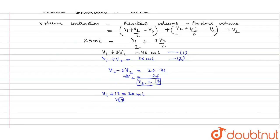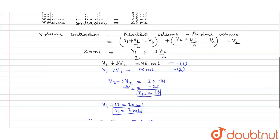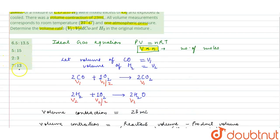So V1 = 7. The volume ratio V1 to V2 is 7:13. The volume ratio of carbon monoxide and hydrogen in the original mixture is 7:13, and the fourth option, 7:13, is the correct option. I hope you understood the solution, thank you.